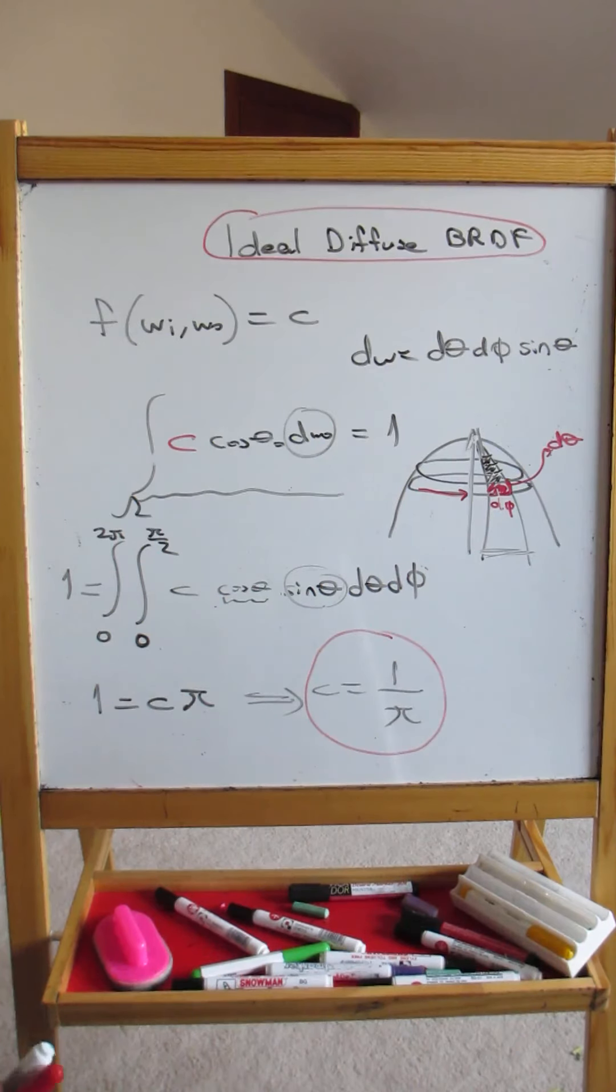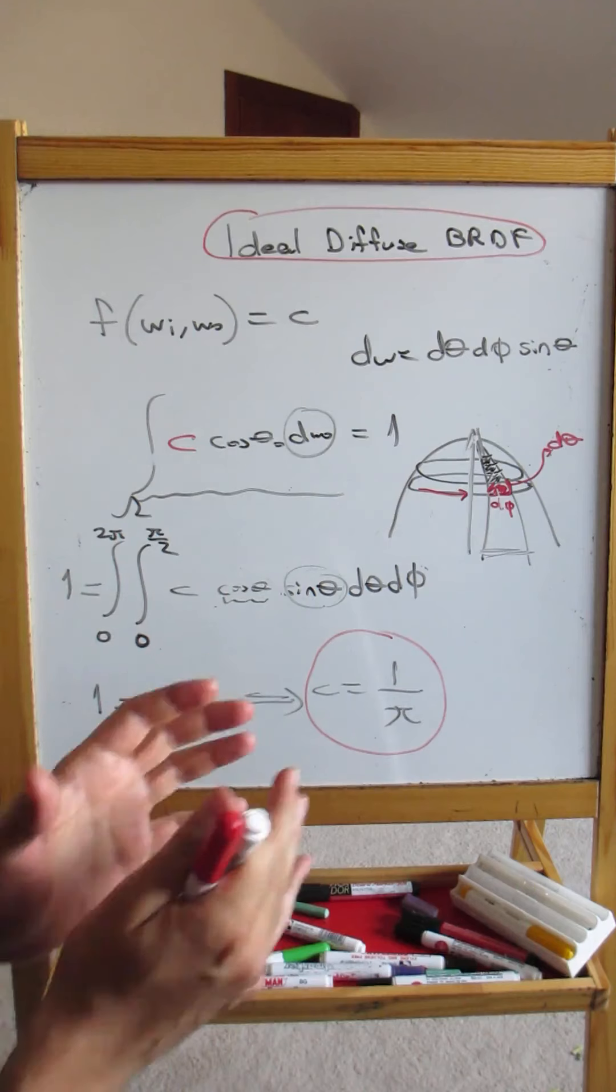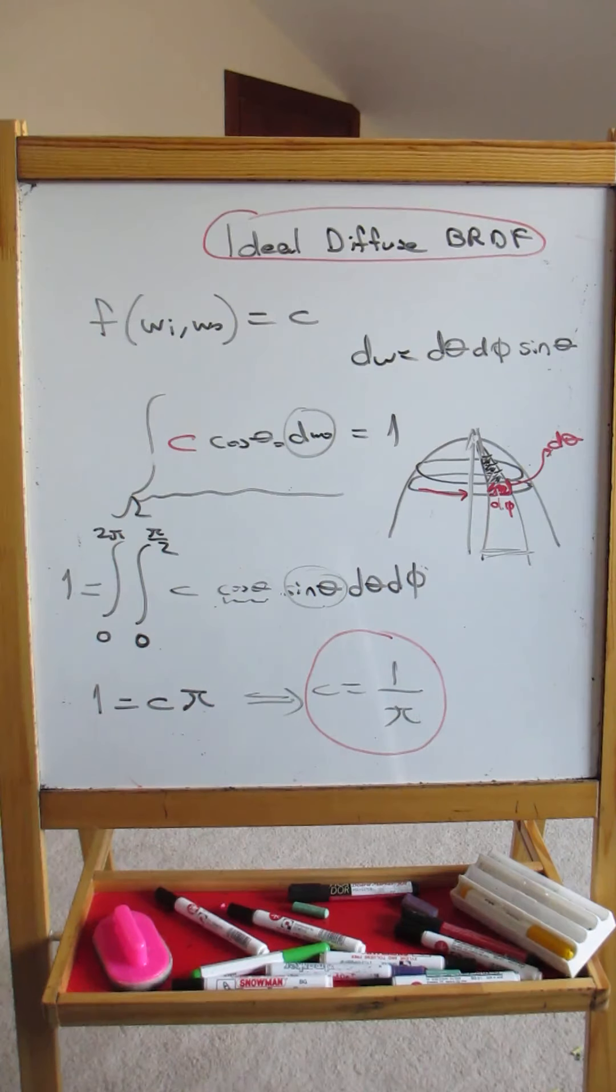This is known as an ideal diffuse BRDF. So we will be using this to model BRDF. We will be using the diffuse part and the specular part. And for the diffuse part, we will be mostly using this result. Ideal diffuse BRDF.